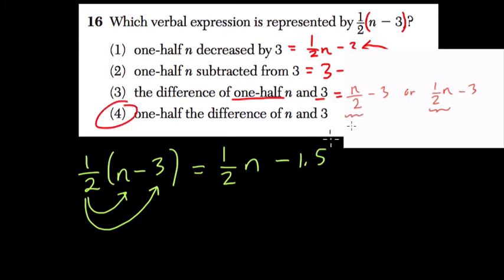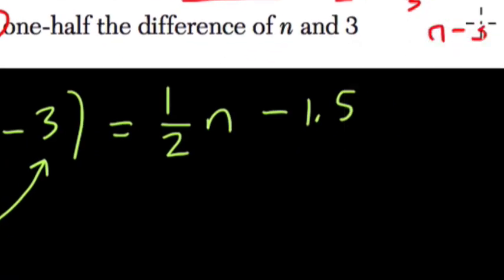So number 4 has to be our answer, and that makes sense if you read it. They write 1/2 the difference of n and 3. That means we're finding the difference of n and 3 and taking 1/2 of that difference. Multiplying of.